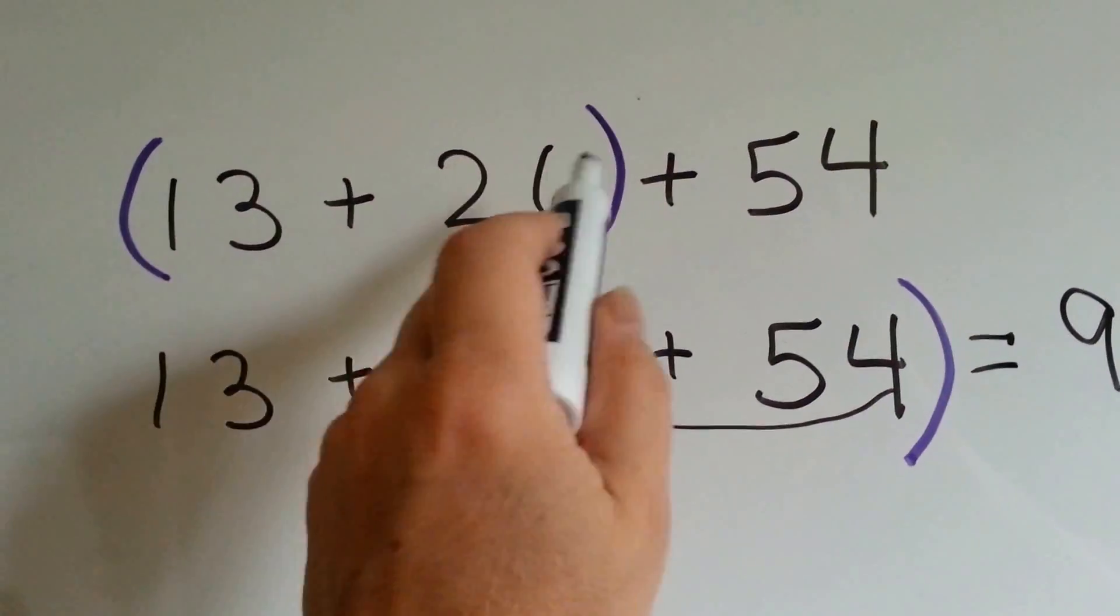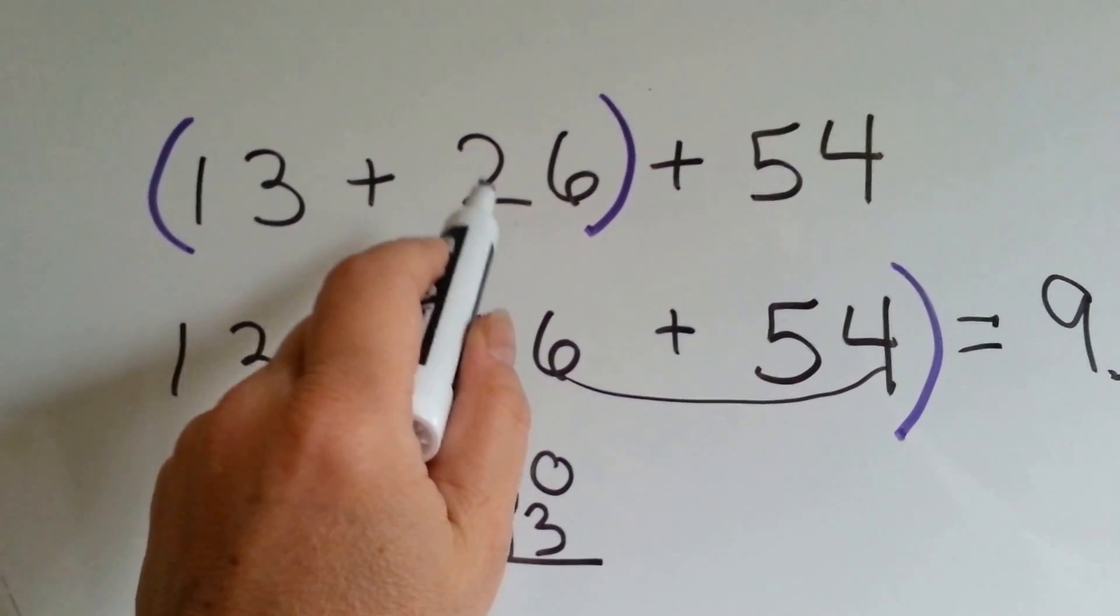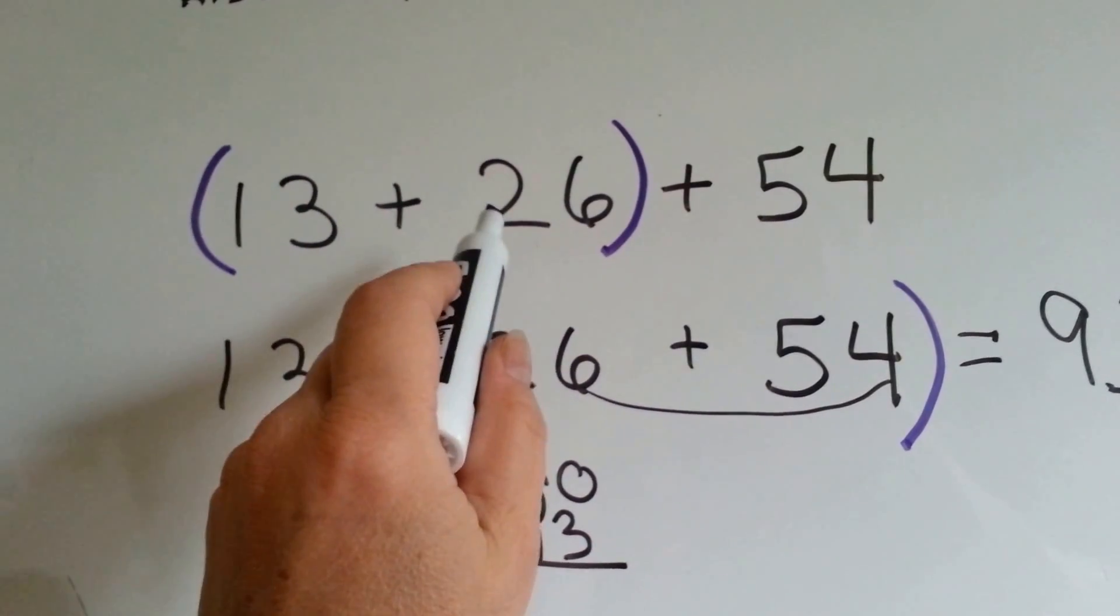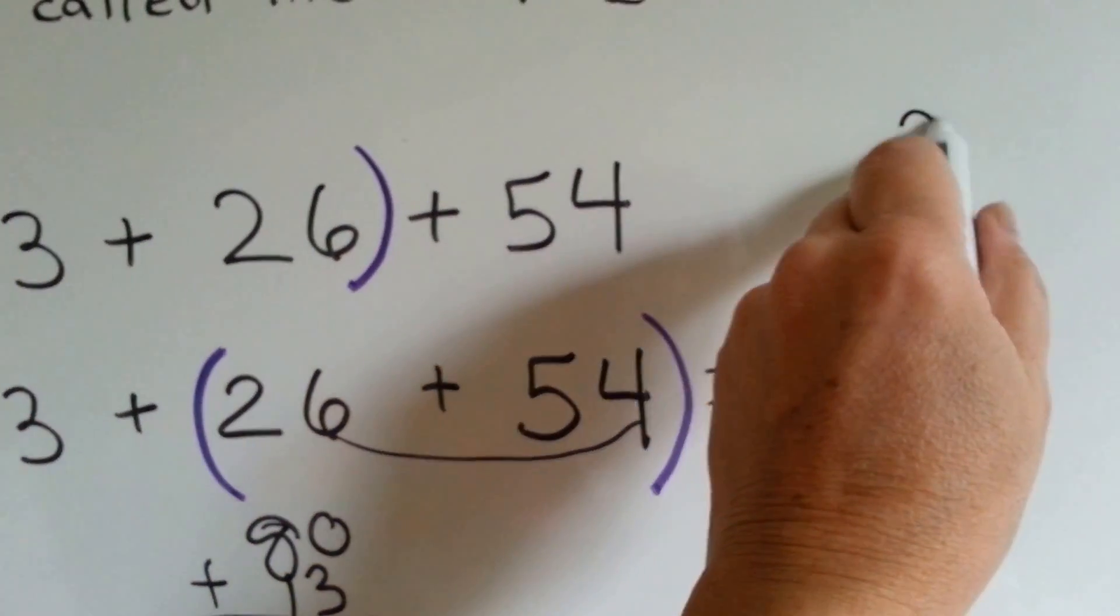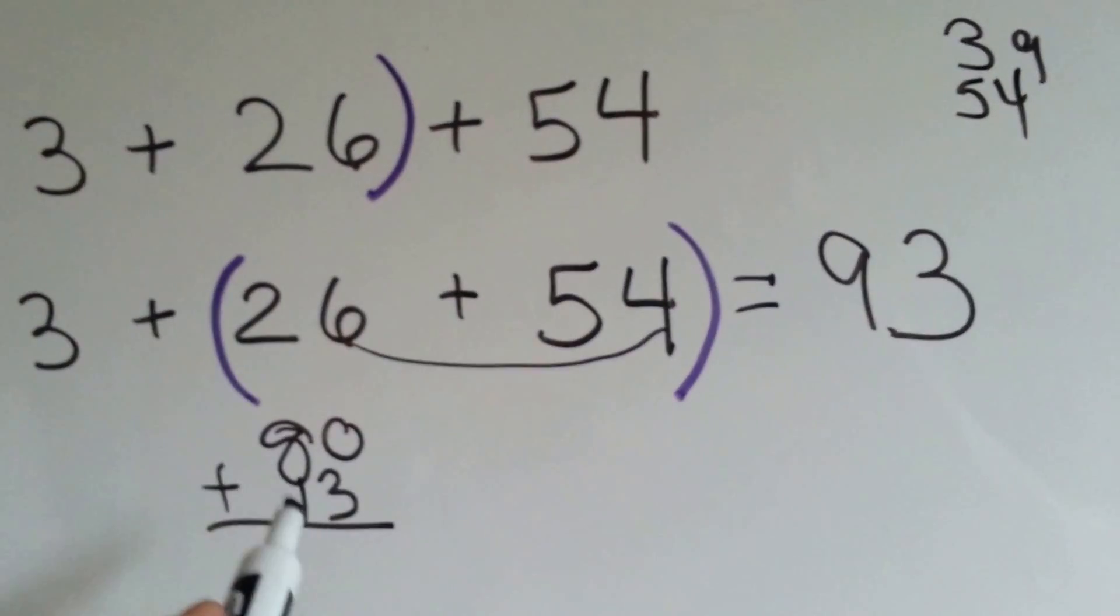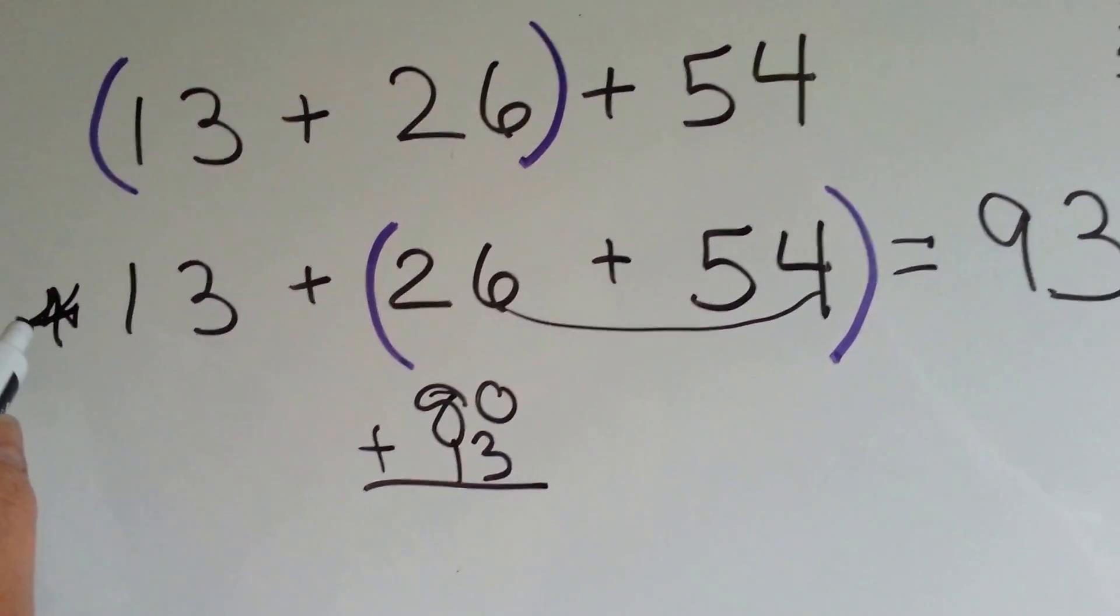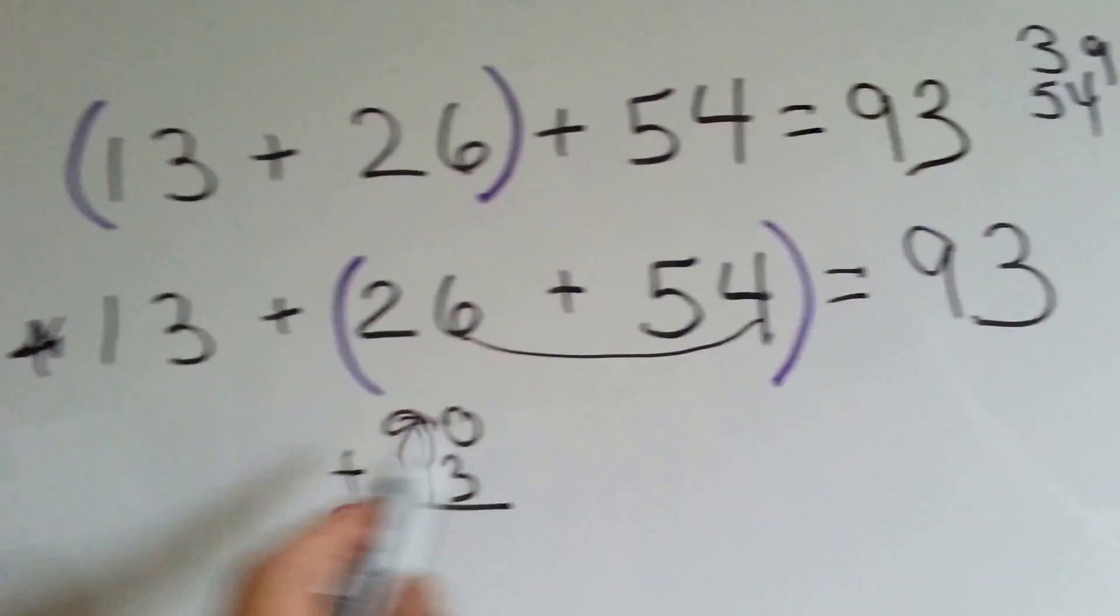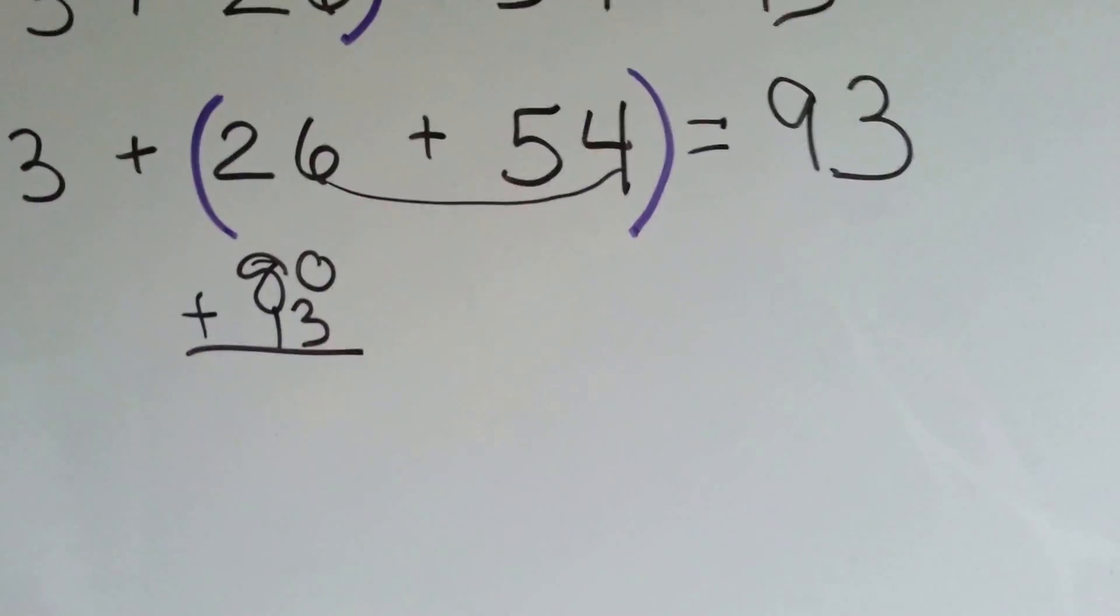What if we were to add these together first? You'd have 6 and 3 is 9 with another 10. So that's 19 and 2 more 10s is 39. Now you have 39 and you need to add 54 to it. Was that as easy as this one? No. So this one here is the easier one. They both equal 93. It's just that this one, using the associative property, was the easier one to add.